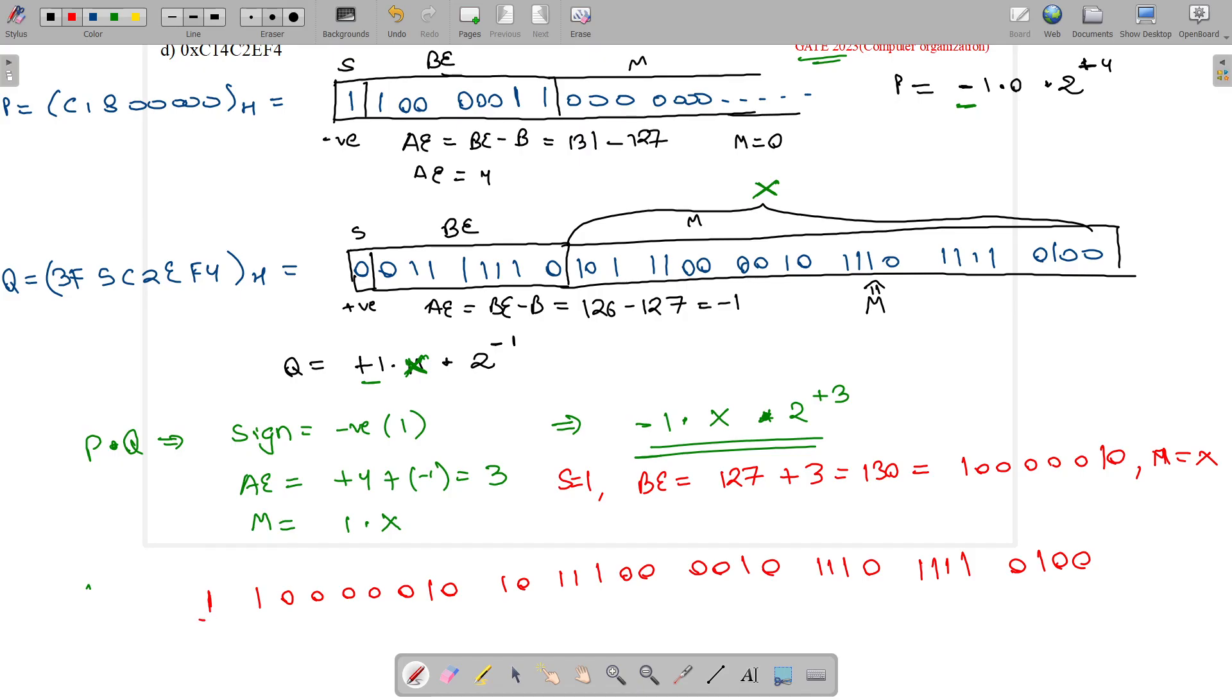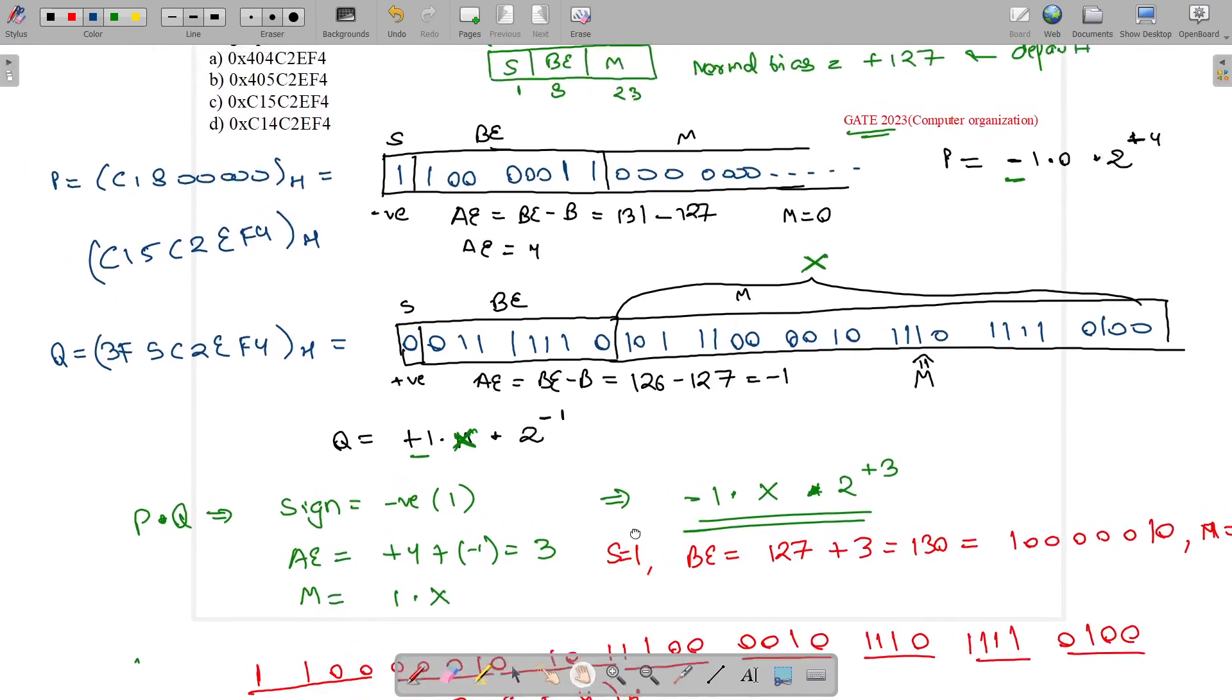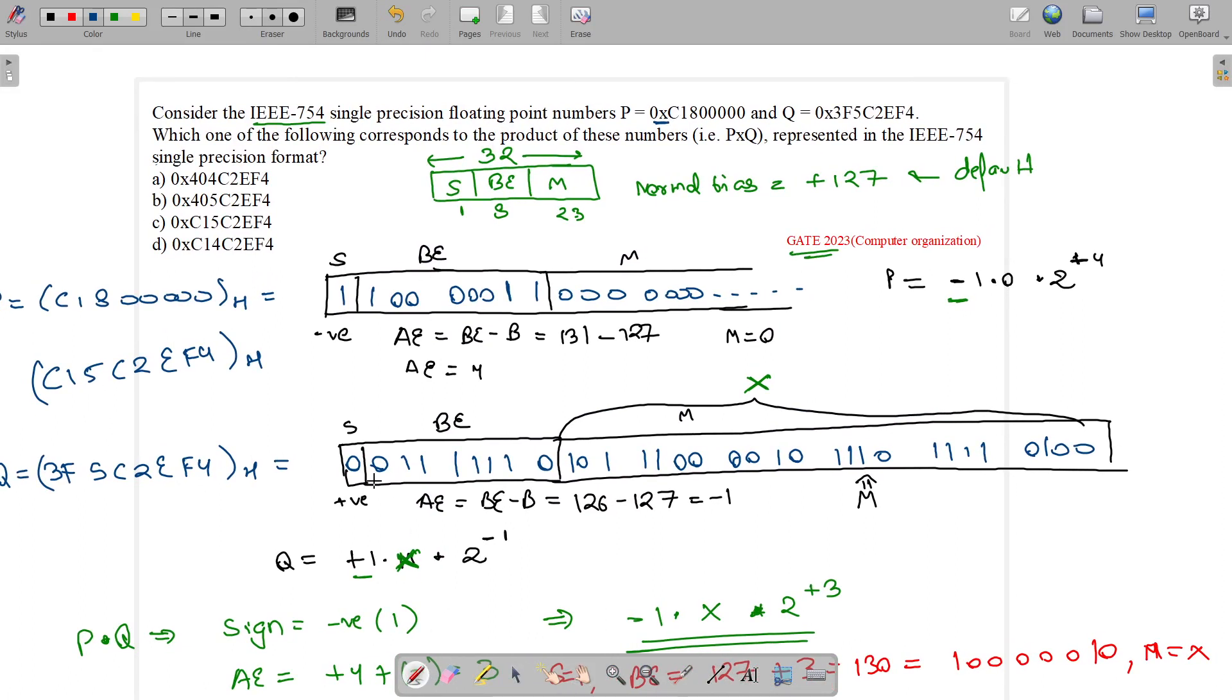Let's convert it into hexadecimal format by pairing of four. This equals C, these four equal 1, this equals 5, we have C15, then 1100 is C, so C15C, then 0010 is 2, then triple one zero is E, all ones are F, and 0100 is 4. The answer is C15C2EF4 base H. Let's see the options. Which option is matching? We have 0xC15C2EF4, so the answer is option C.